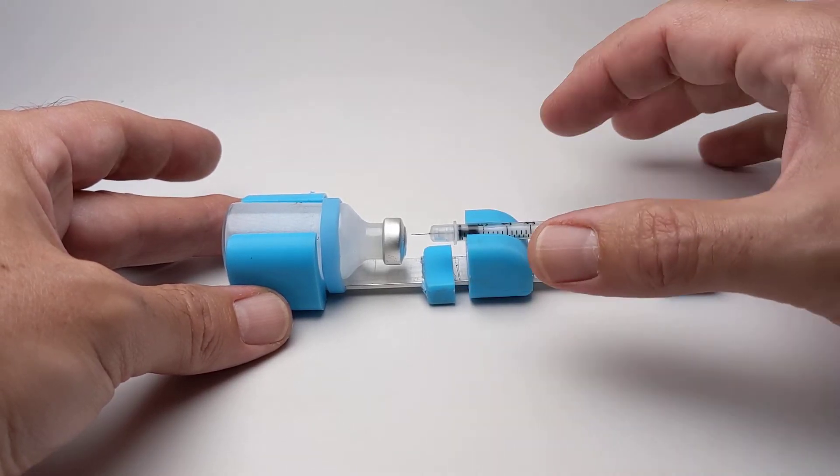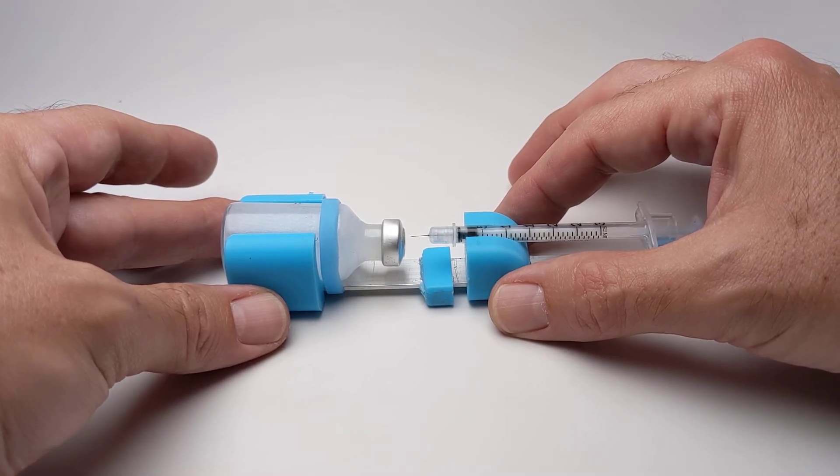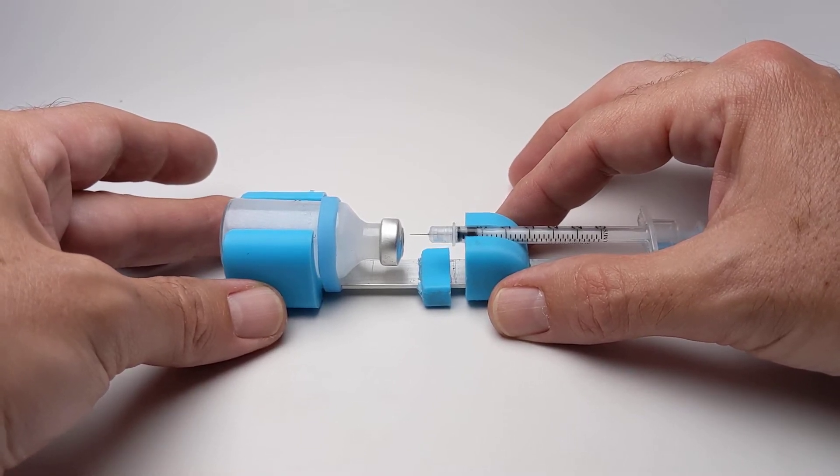So that spacer is very important when it comes to the end of the vial to make sure that you're extracting the last little bits of insulin.